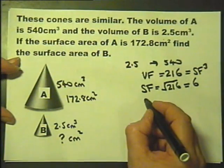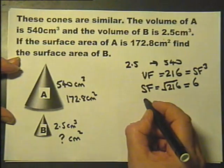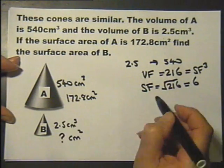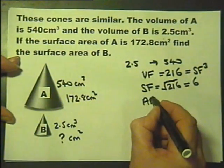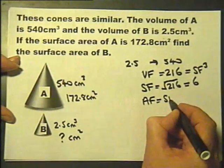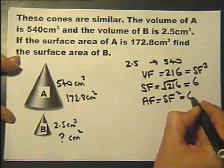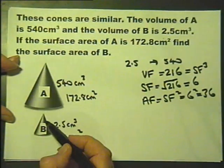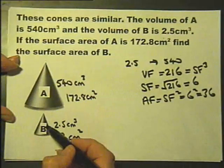But we're after the area factor. We want the connection between the surface area of this and the surface area of this. And the area factor is the linear scale factor squared, which is 36. So the surface area of this is 36 times the surface area of this.